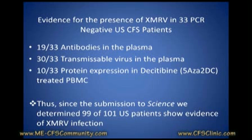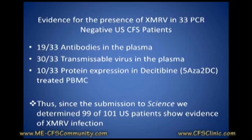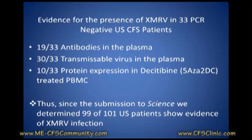Now that has a lot of implications, and it's certainly the reason why the CDC, the NIH, and others that really care about the blood industry are looking long and hard at this. They found a transmissible virus in the plasma and were able to infect cell lines — it suggests there's an infective component at least in the blood. They worked out that they were able to find 99 of the 101 patients that way.